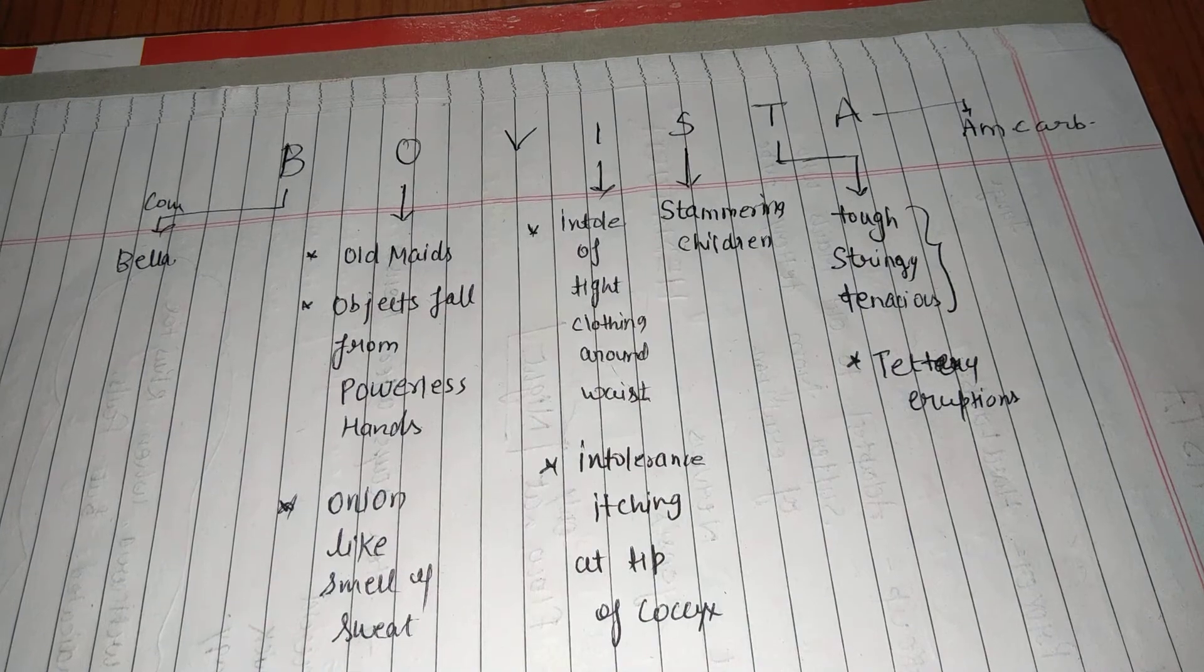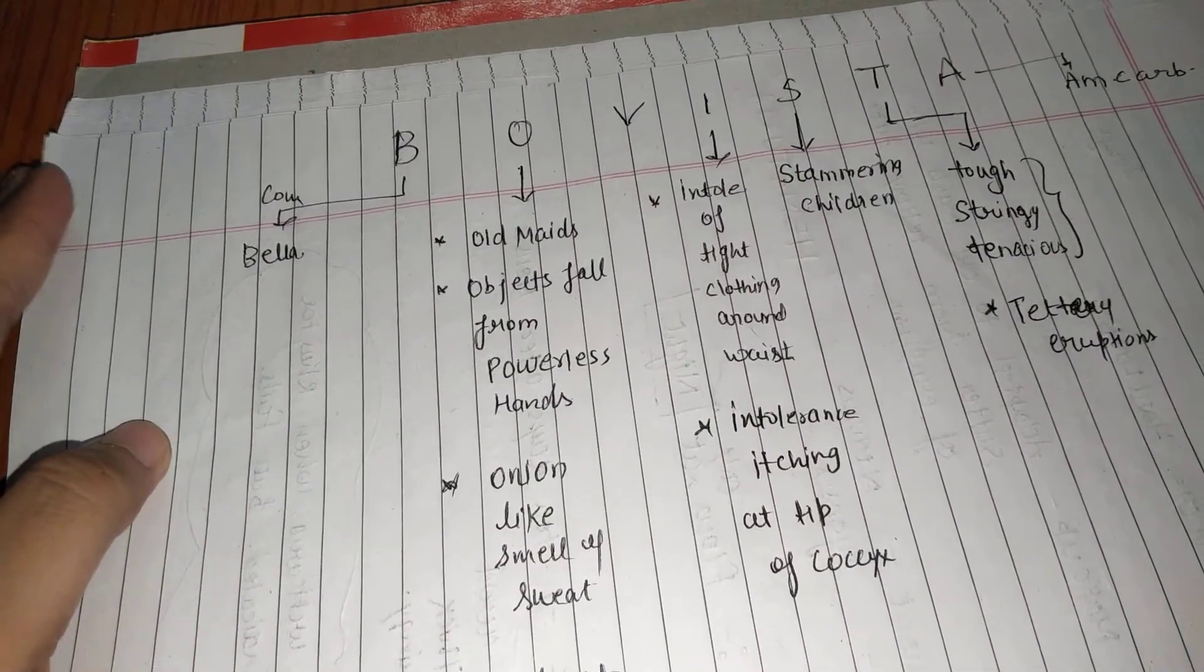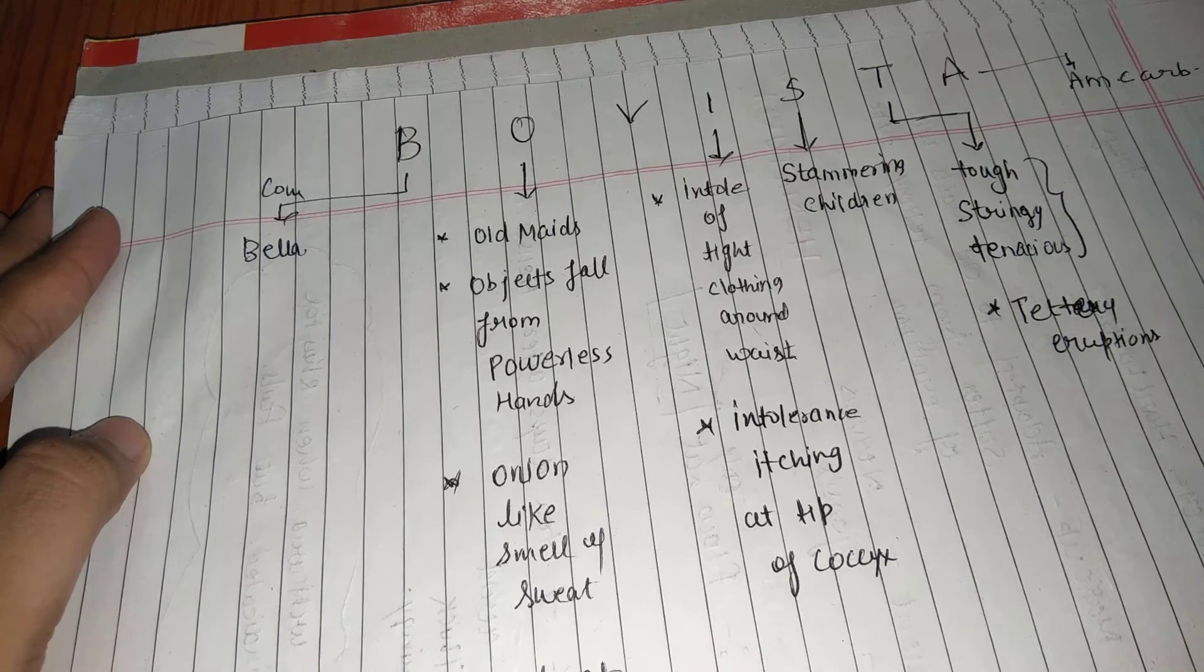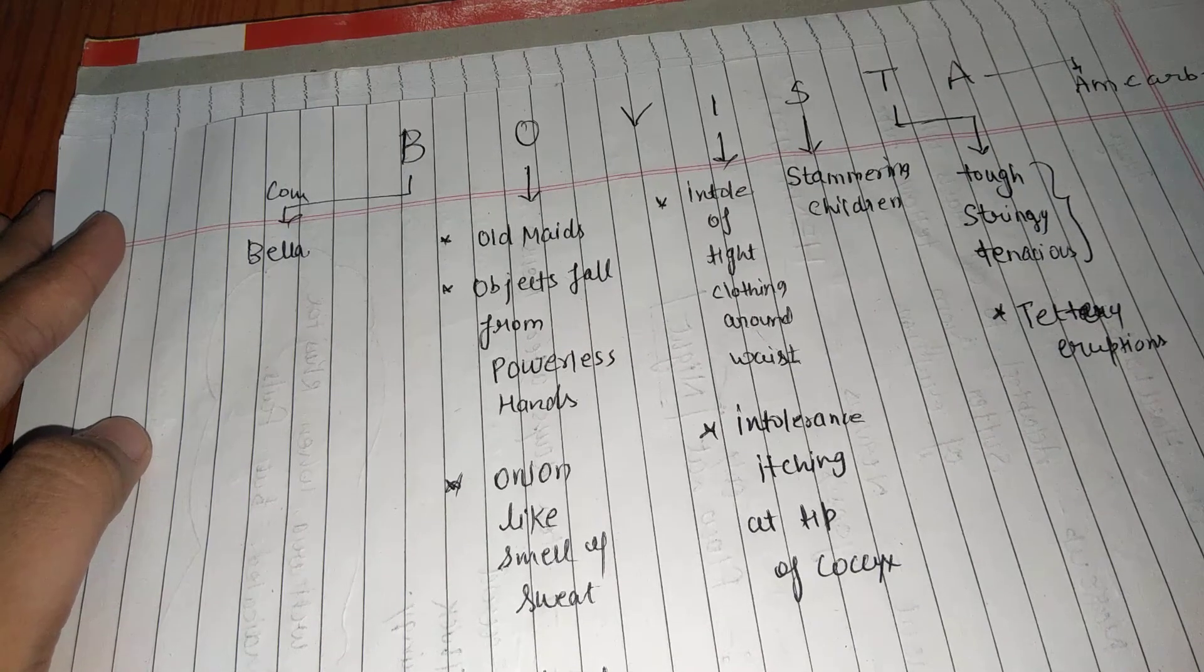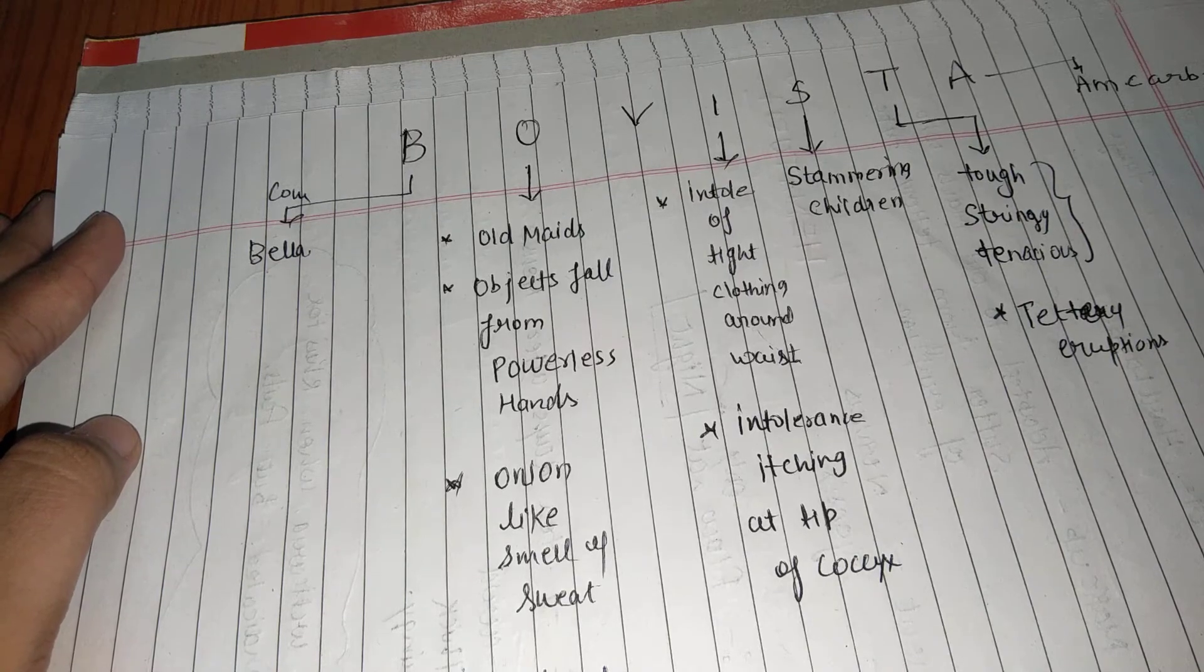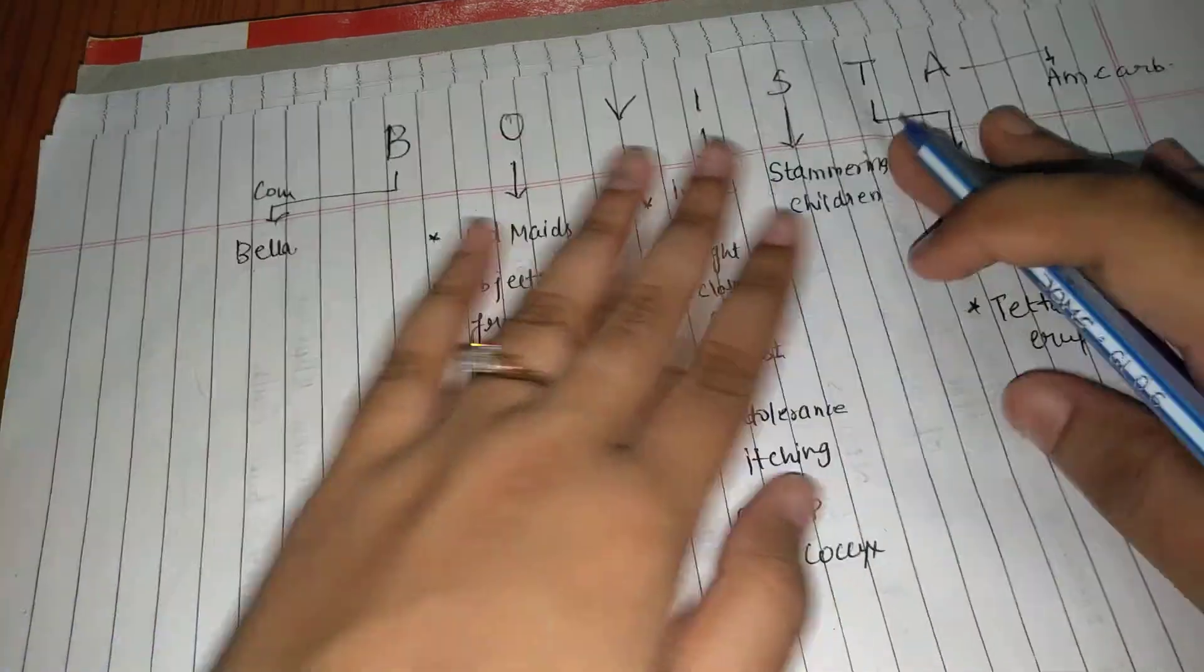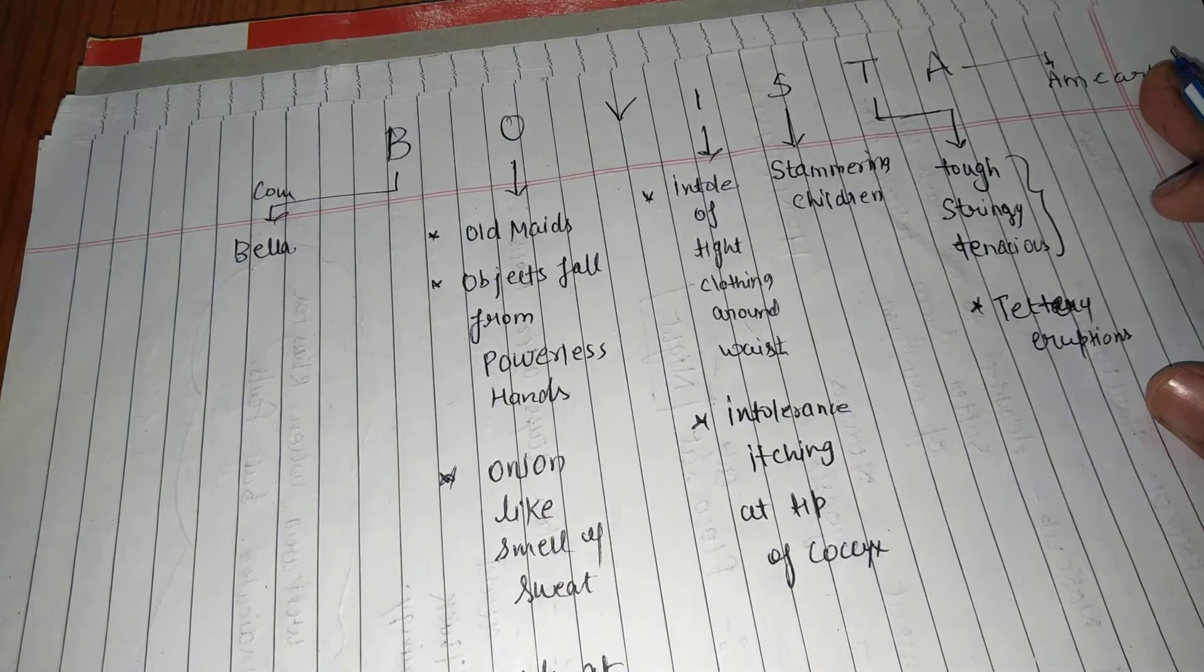So if you want to improve your materia medica, then basically, according to my opinion, if you want to know the medicine, at least 10 symptoms should come. So we can say that your materia medica is good. If you prepare a note like this, how many symptoms can you do?